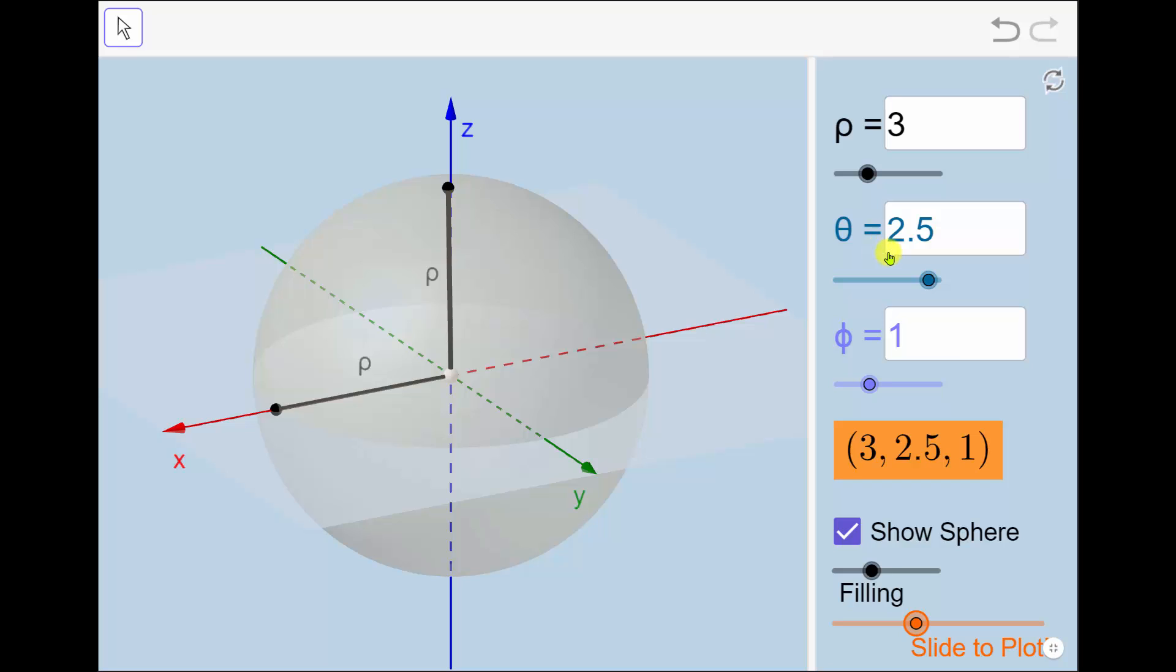And now theta equals 2.5, again, is the angle counterclockwise from the pole or positive x-axis. So here we see theta equals 2.5, meaning 2.5 radians.